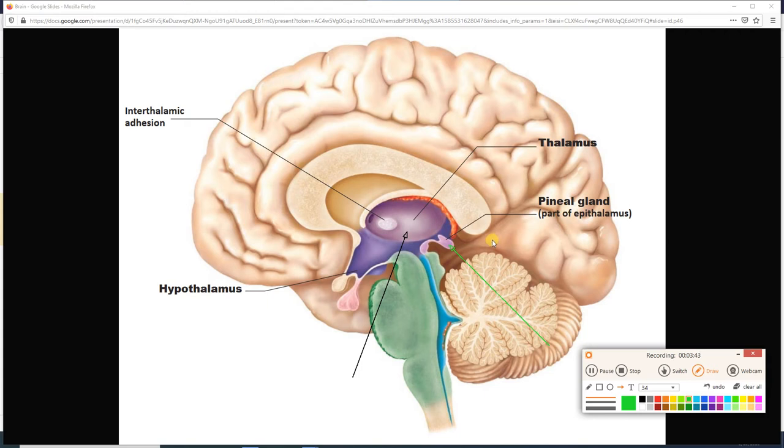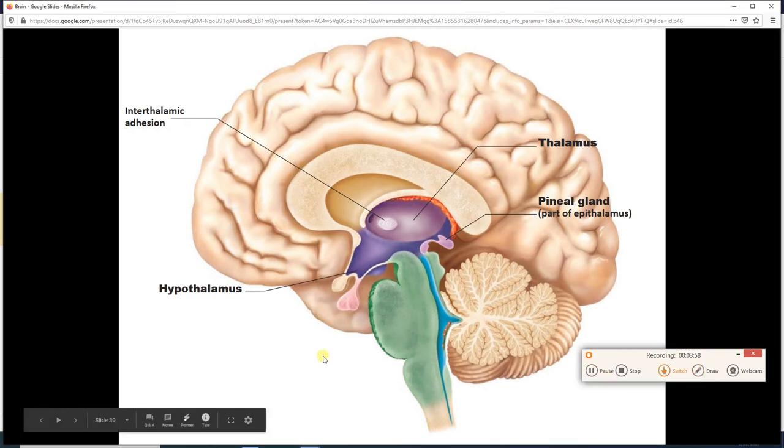It doesn't exactly look epi, like above the thalamus, but that's because we're bipeds. If we were quadrupeds, then the name would work out great. So, these are the three regions of the diencephalon. Let's talk about each one of them in turn.